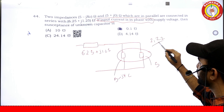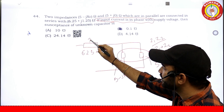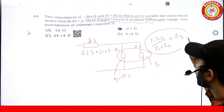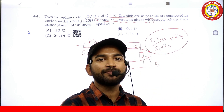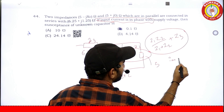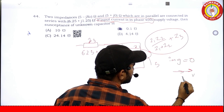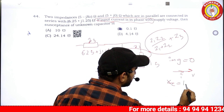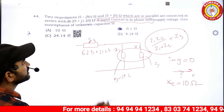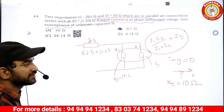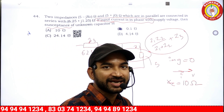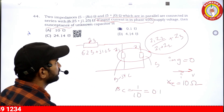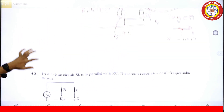The two impedances in parallel give z1 into z2 divided by z1 plus z2. After solving, the imaginary part is zero for in-phase condition, giving xc equals 10 ohms. The susceptance Bc equals 1 by xc, which equals 1 by 10, equal to 0.1. So the answer is 0.1.